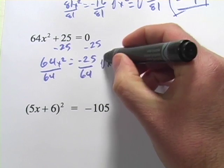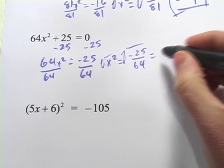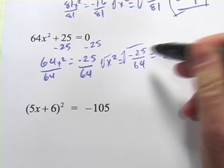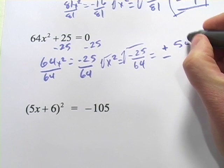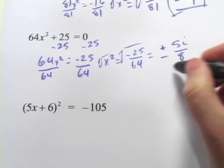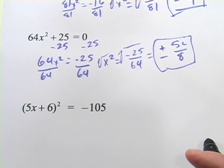Here, when I take the square root, I'm going to get a positive or negative. Square root of 25 is 5, so square root of negative 25 is 5i. And square root of 64 is 8. Positive or negative 5i over 8.